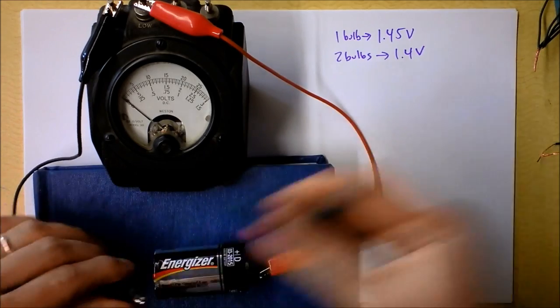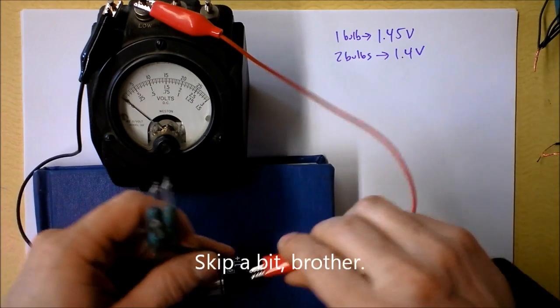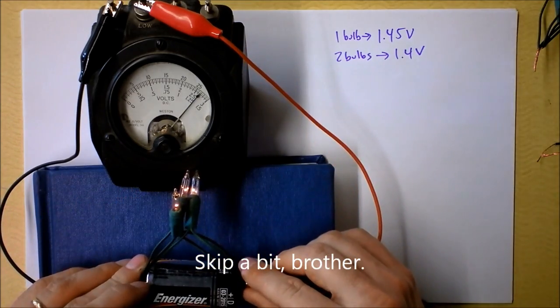Two bulbs. 1.4 volts. Oh shoot. Now these bulbs are all assumed to be the same. They might not actually be. Let's try three volts. I'll clip that guy. Three bulbs right here. Clip them on. Try it out. Oh man.